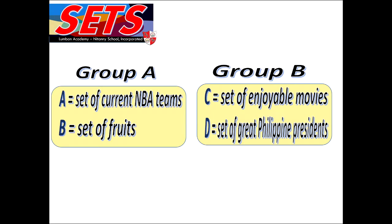Can you now see the difference between the two groups? In group A, we can easily identify if an object is an element of a certain set, while in group B, it's hard to say. You have to look at the identifiers or adjectives used. If a set uses a certain adjective, it surely is not a well-defined set.